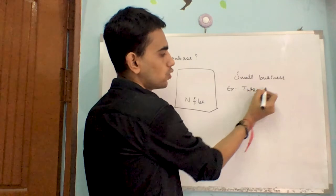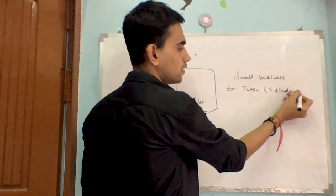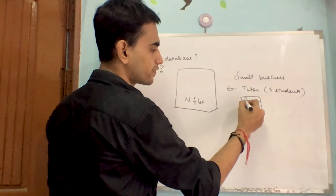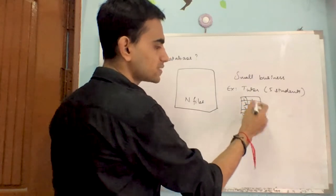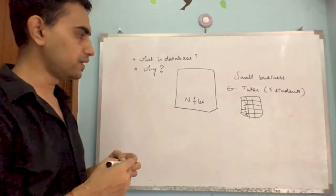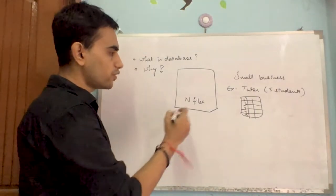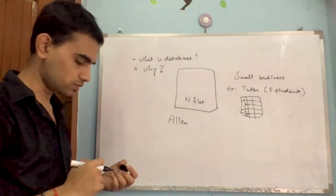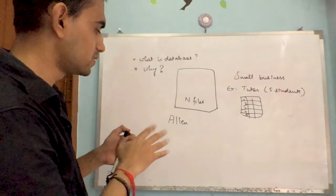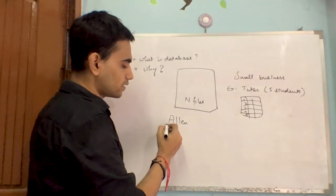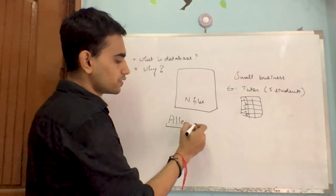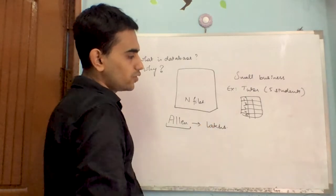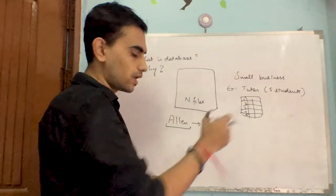For example, let's say there is a tutor teaching five students. For that tutor, maintaining a simple Excel file with five different rows will be sufficient to monitor how the data is being referred to. But think of a large coaching center like Allen, which is famous for engineering preparation. The number of students enrolled in Allen all over India would definitely be in the lakhs. You can no more rely on a simple Excel file to save this large amount of data.